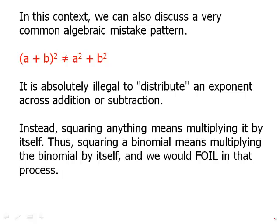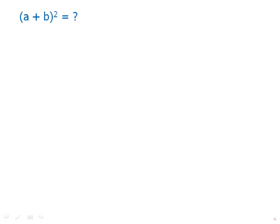Instead, squaring anything means multiplying it by itself. Thus, squaring a binomial means multiplying the binomial by itself and we would FOIL in that process. (a + b)² means (a + b)(a + b). That's what it means to square something. Well now we have a product of binomials, so now we would FOIL.